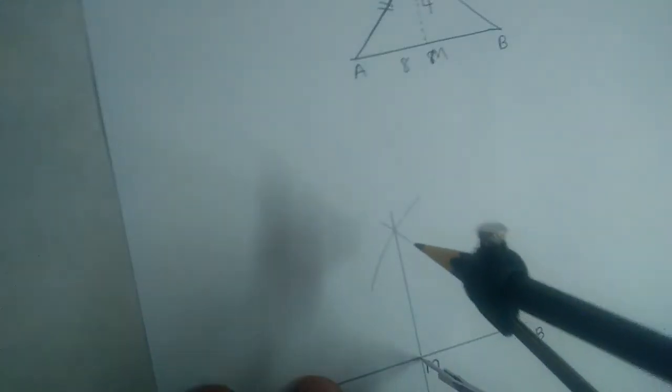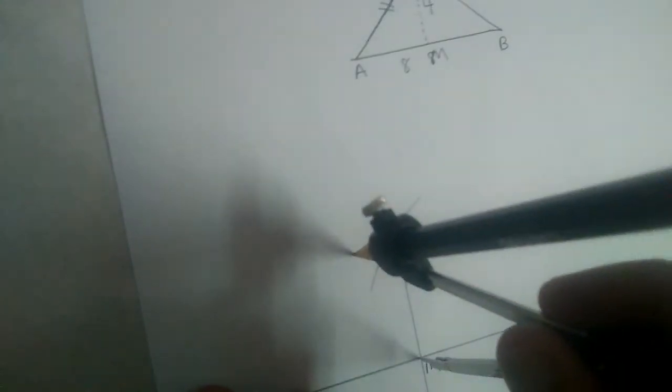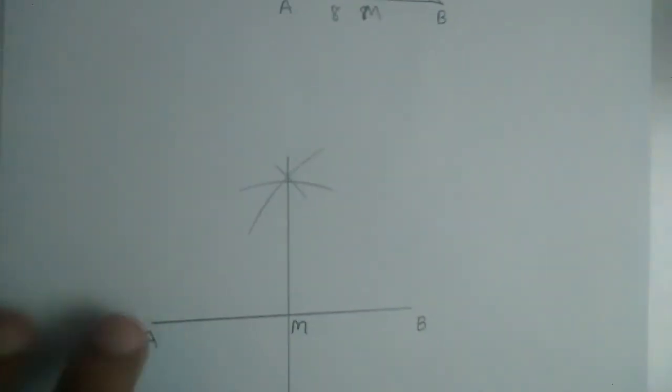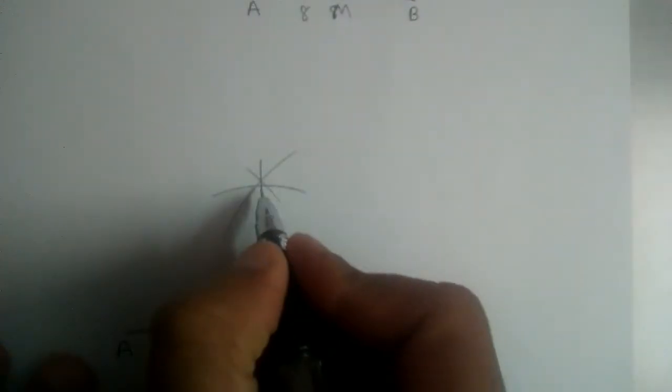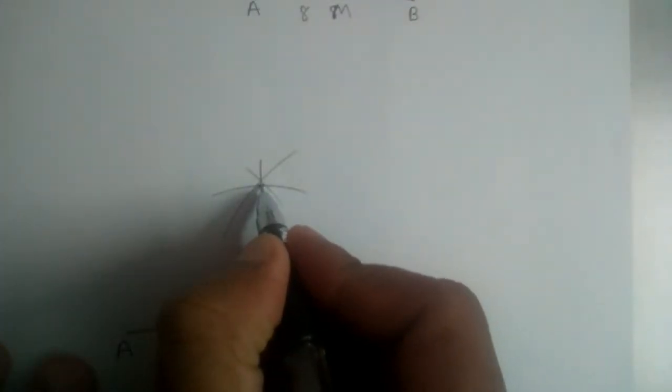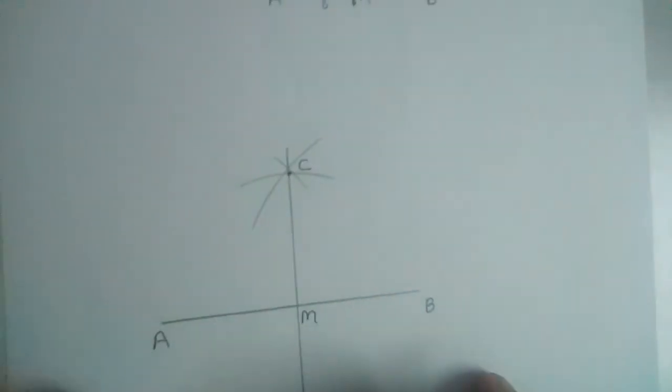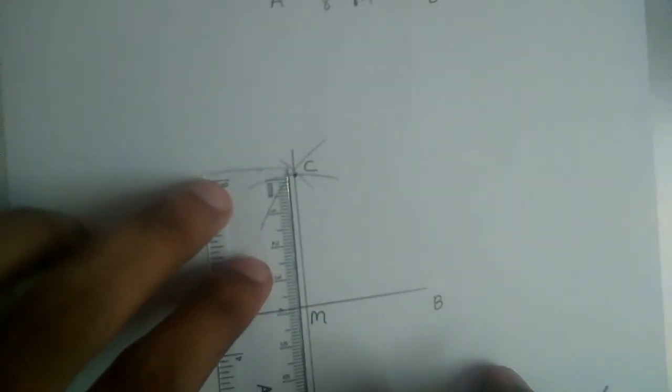So with M as center, let us draw an arc. I hope you are able to see this. Everything is very close here. So this is point C. This will be 4 cm.